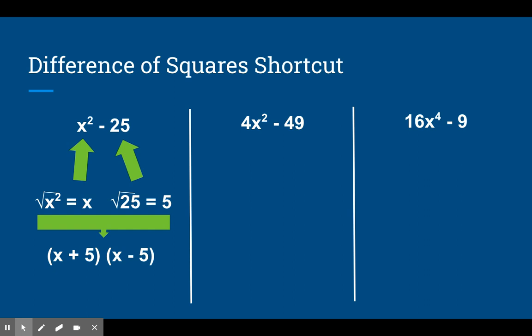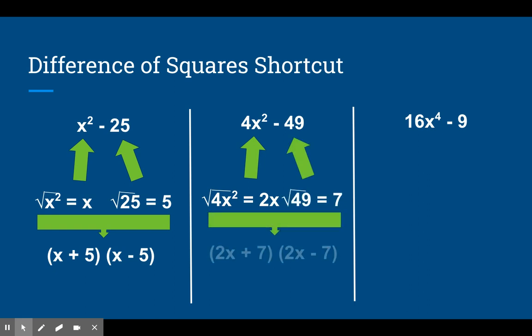If we look at another one, 4x squared minus 49, 4x squared is a perfect square. The square root of 4x squared is 2x. The square root of 4 is 2, and the square root of x squared is x. Similarly, the square root of 49 is 7. So if we combine 2x and 7, we have 2x plus 7, and 2x minus 7.